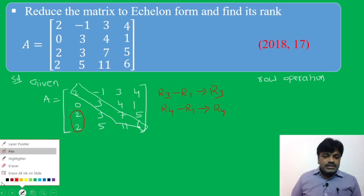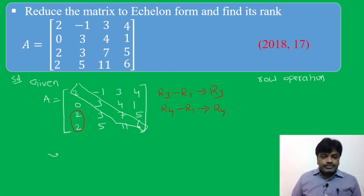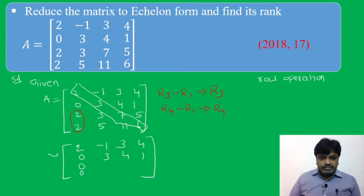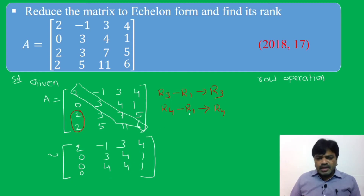This is equivalent to: Row 1: 2, -1, 3, 4. Row 2: 0, 3, 4, 1 (unchanged). R3 ← R3 - R1: 3-(-1)=4, 7-3=4, 5-4=1, giving row 3: 0, 4, 4, 1. R4 ← R4 - R1: 5-(-1)=6, 11-3=8, 6-4=2, giving row 4: 0, 6, 8, 2.